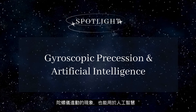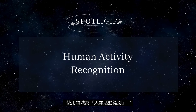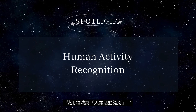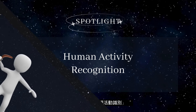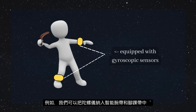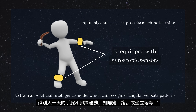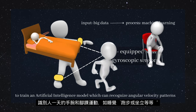Gyroscopic precession can also be used in artificial intelligence. The area it is used in is called human activity recognition. As gyroscopes can measure angular velocity, an idea is that they can be incorporated in smart wristbands and ankle bands. Big data can be used to train an AI model through machine learning to recognize the angular velocity during normal movements of a day. Graphs can be plotted to recognize activities such as sleeping, running, or sitting down.